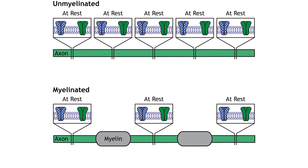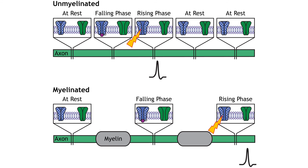The presence of myelin leads to a significant increase in action potential conduction speed compared to an unmyelinated axon. For a myelinated axon, the action potential jumps between nodes of Ranvier in a process called saltatory conduction. The nodes have a high density of voltage-gated channels, and the action potential is able to skip the axon segments covered by the myelin. In an unmyelinated axon, the action potential moves in a continuous wave. In addition to saltatory conduction, the presence of myelin also insulates the axon, preventing charge loss across the membrane, which also increases the speed of the action potential.